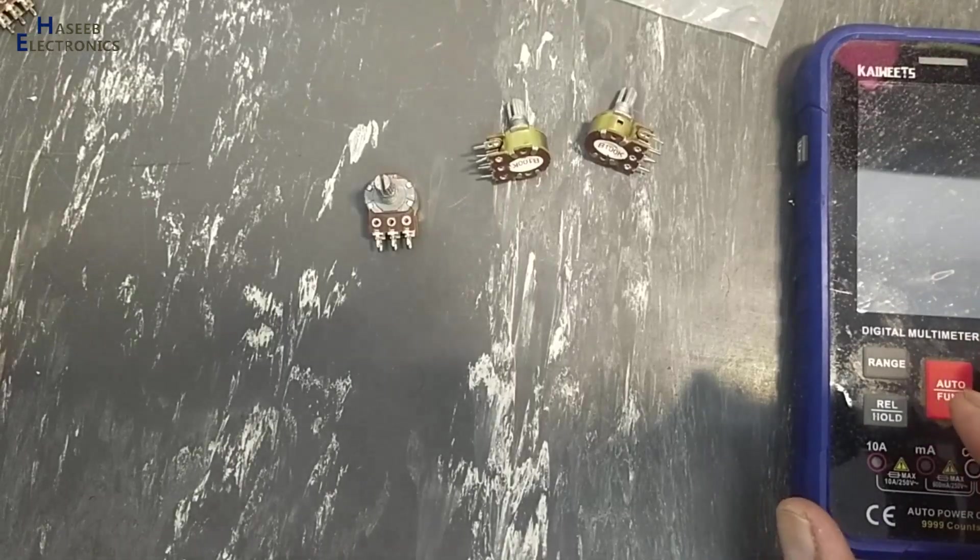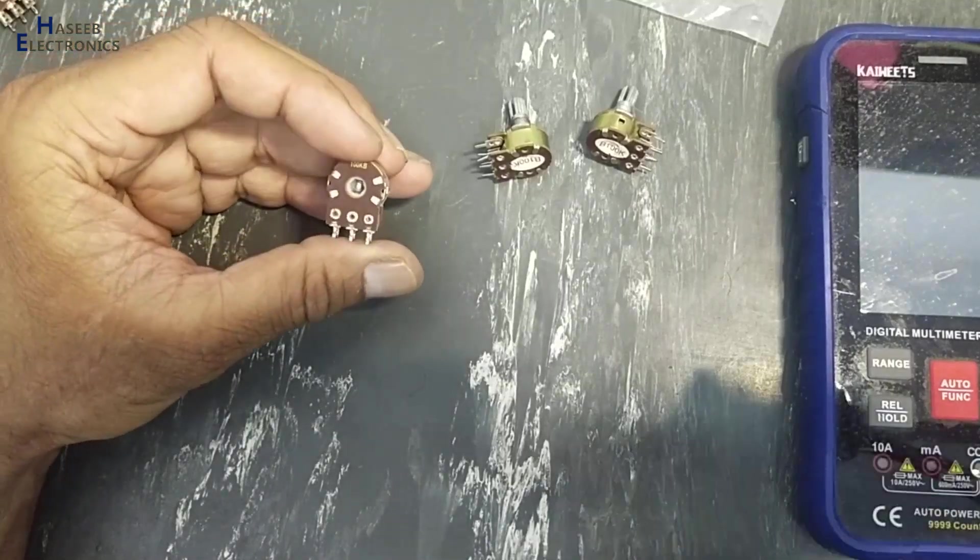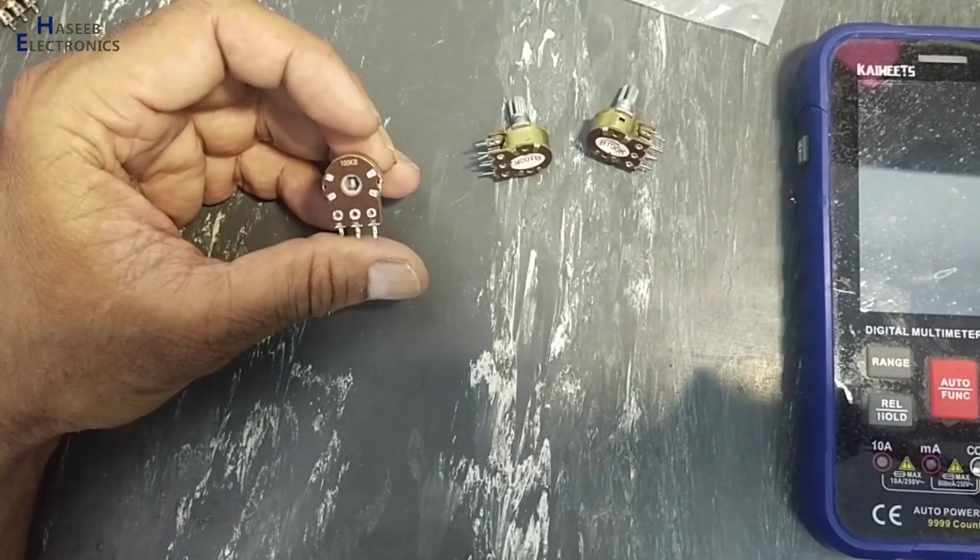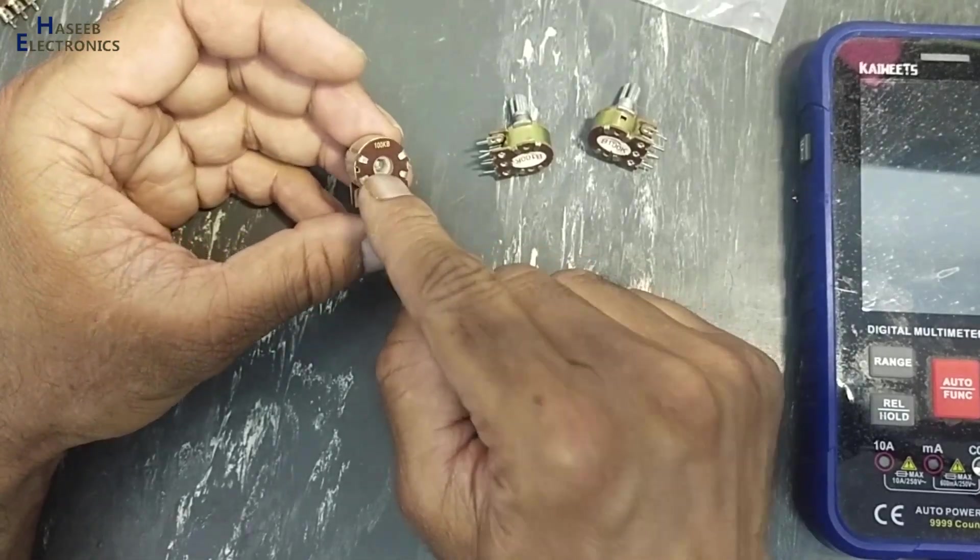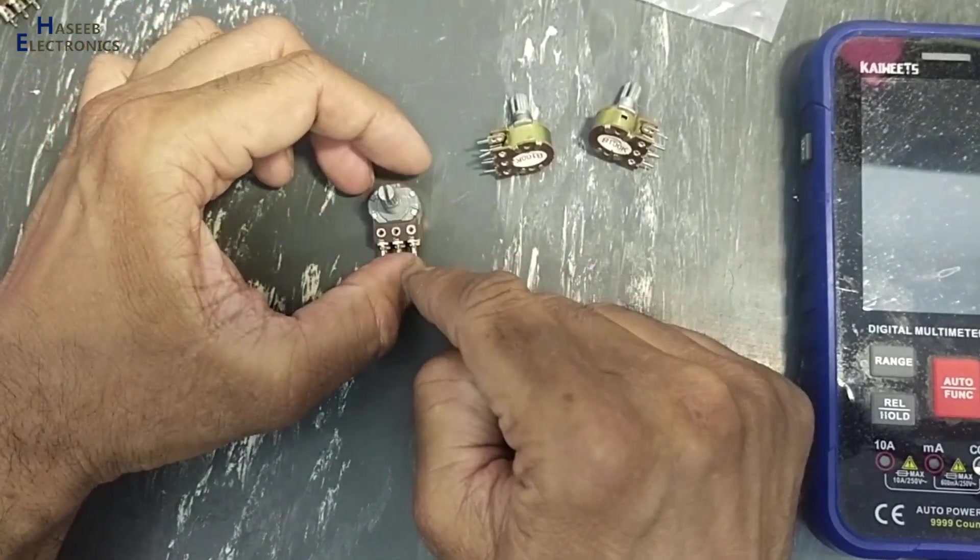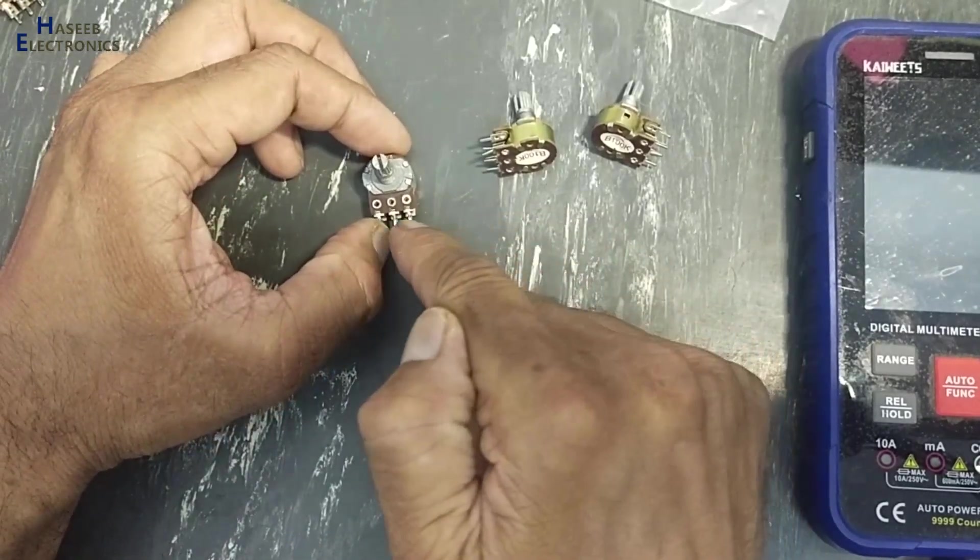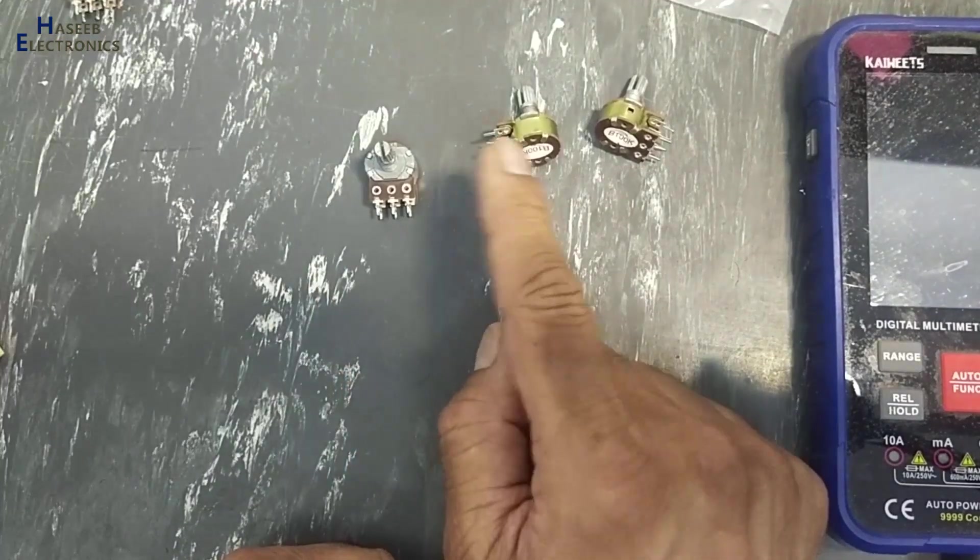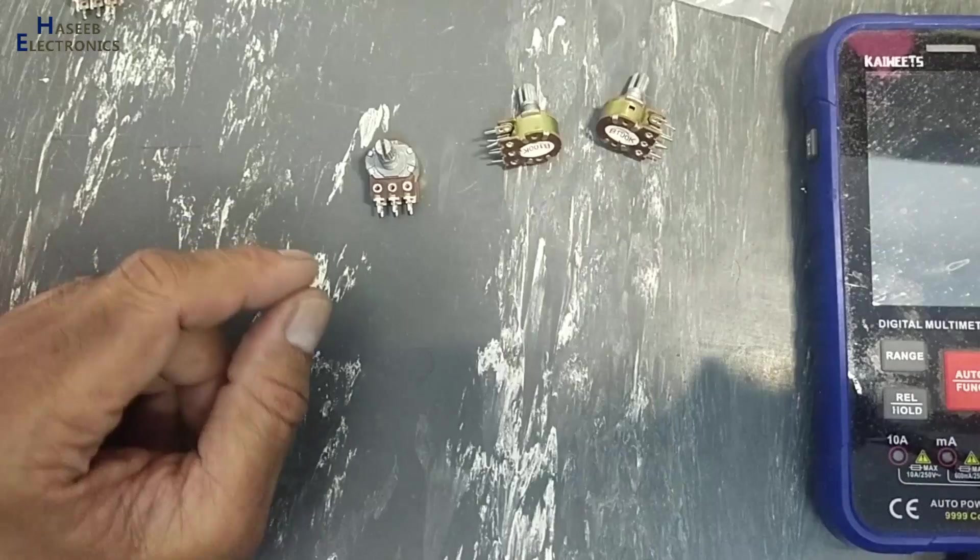Assalamu alaikum warahmatullahi wabarakatuhu, friends. Welcome back to my channel. While working on an audio power amplifier, I detected this potentiometer was not working properly. That was causing hum sound and sound distortion. Two potentiometers were bad. I purchased two new potentiometers. These are fake. Let's see.